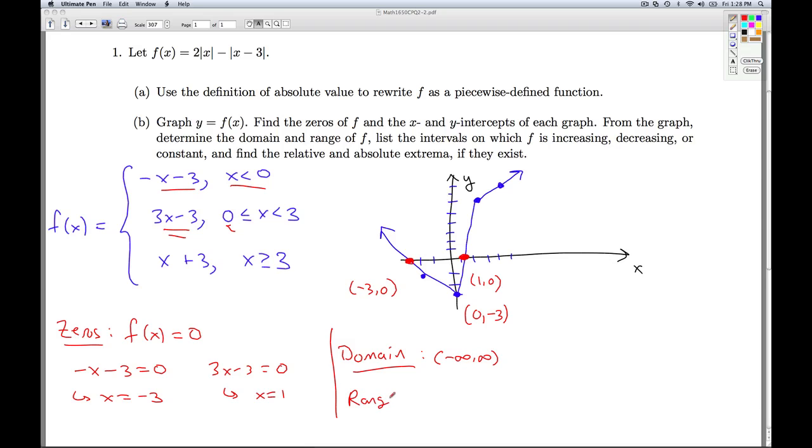What about the range? Well, the range is something we usually get from the graph. If I imagine taking this graph and pushing it to the y-axis, I would get the entire y-axis covered down to and including negative 3. Or in other words, I get every y value from negative 3 on up.